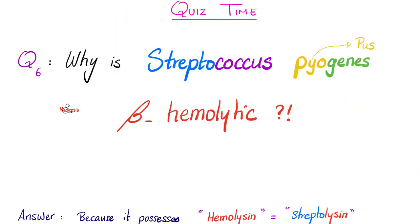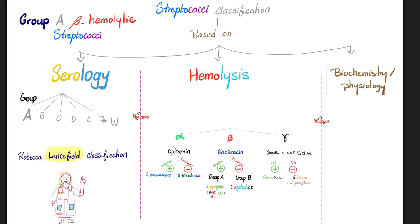Let's answer the question from the previous video: why is Streptococcus pyogenes beta-hemolytic? Why does it cause full, complete hemolysis on the petri dish? The answer is because Streptococcus pyogenes has hemolysin, also known as streptolysin — hemolysin causes destruction of red blood cells, i.e., hemolysis.